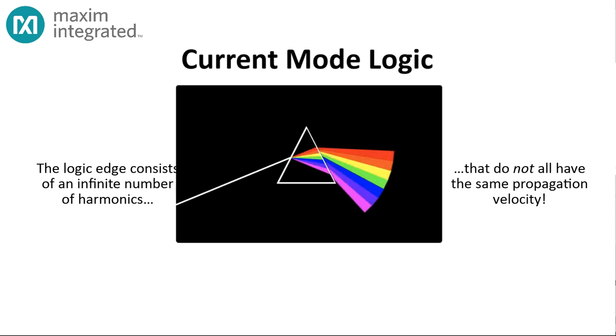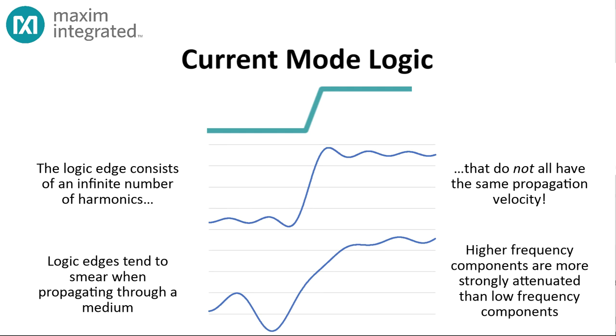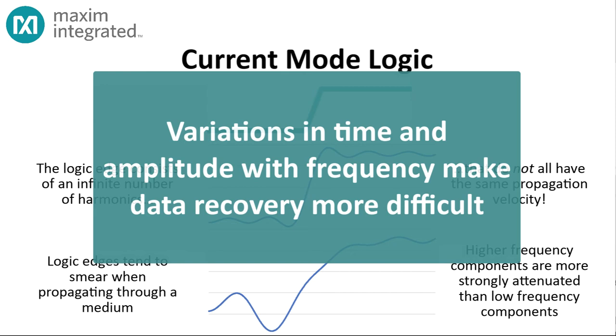The logic edge consists of a set of harmonically related frequencies, each of which, unfortunately, has a slightly different propagation rate. Just as white light disperses into its constituent colors in a prism, the logic edges tend to smear in time. There's another issue as well. The attenuation along the cable is greater at higher frequencies, so not only do higher frequencies tend to separate from the lower frequencies, they are more greatly attenuated. What does that mean? At the receiving end, it means that it's going to be more difficult to recover a usable clock signal from the incoming data, and that in turn means that it's going to be difficult to determine whether a particular bit time represents a 0 or a 1.